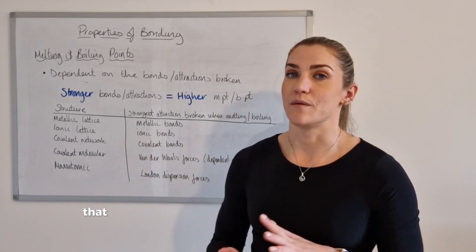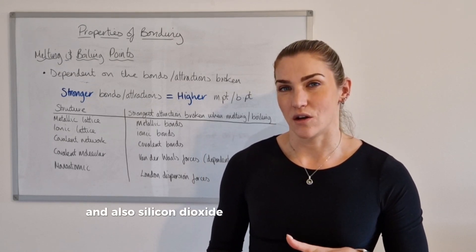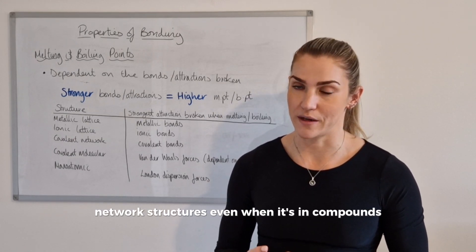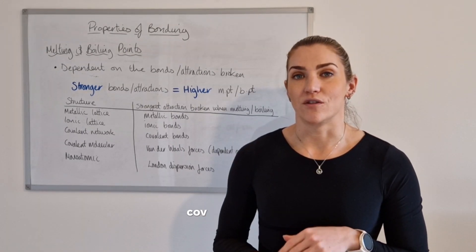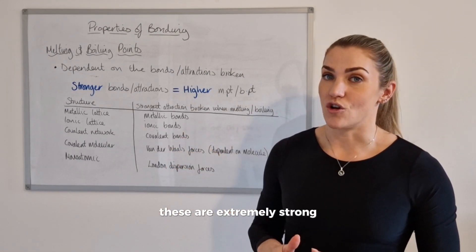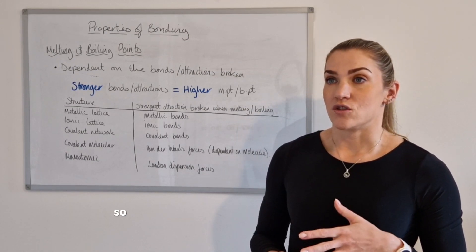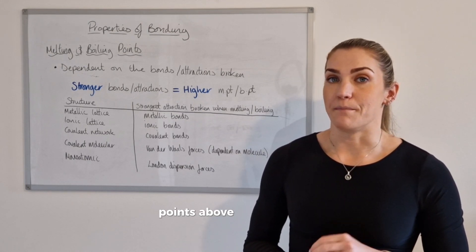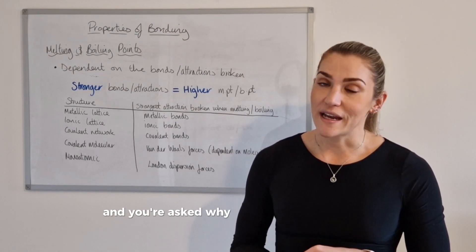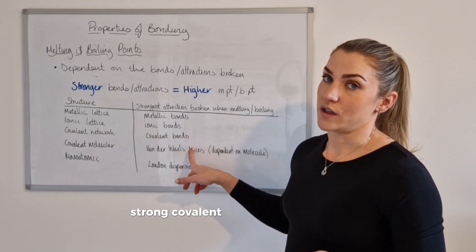Covalent network structures include carbon in the form of diamond and graphite, silicon, boron, and silicon dioxide — silicon generally always forms covalent network structures even when in compounds. When you melt a covalent network the only bonds broken are covalent bonds. These are extremely strong, which means covalent networks tend to have the highest melting and boiling points of all structures — generally always above a thousand degrees Celsius. So if you're ever asked about a substance with a melting point above a thousand degrees, it's because it's a covalent network and you have to break strong covalent bonds when it melts.